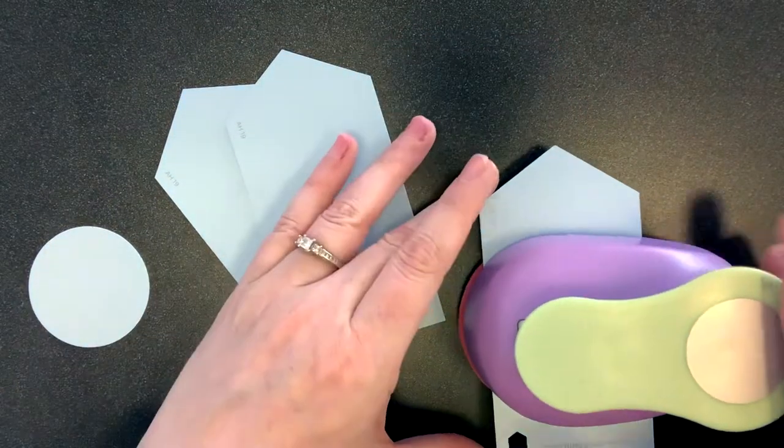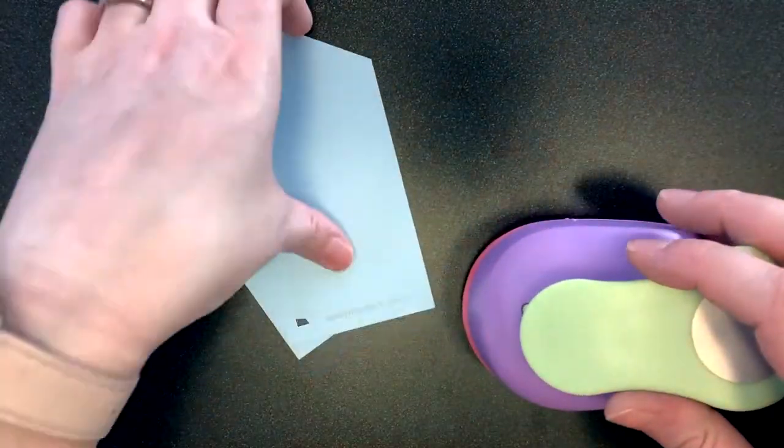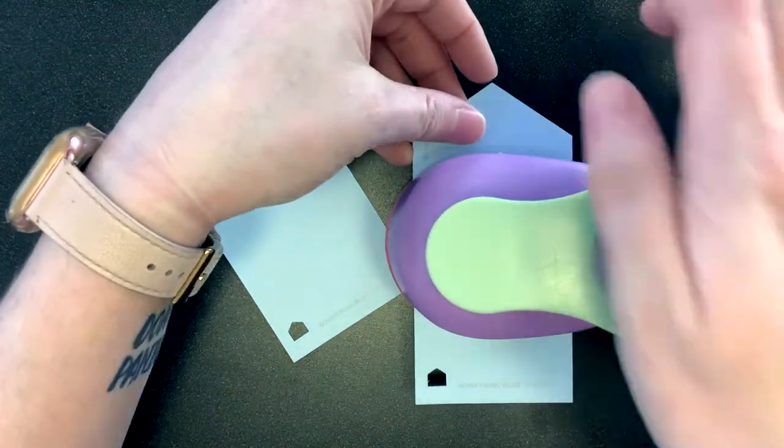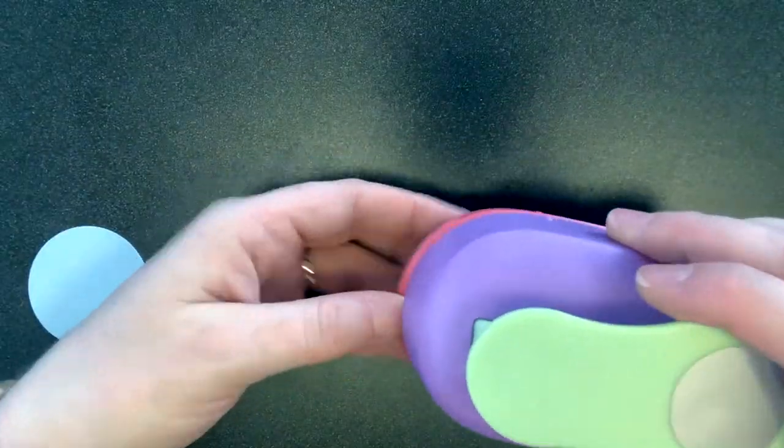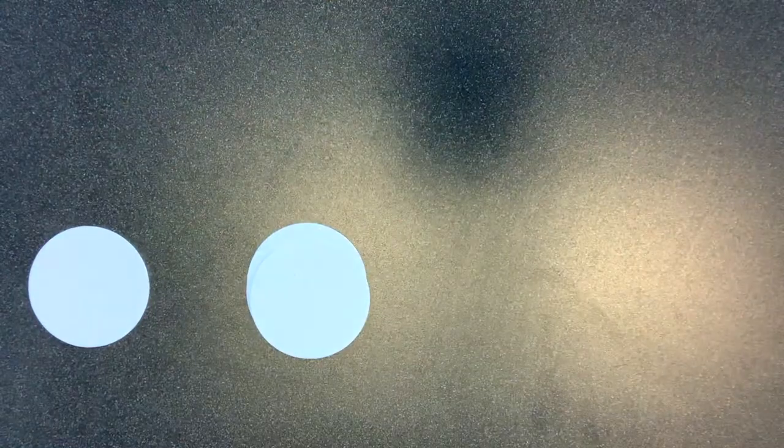For your largest circle, you will need to cut four holes. This is so that the text on the back of the largest circle doesn't show. The smaller circles will be glued onto the larger ones, so you only need two of those.